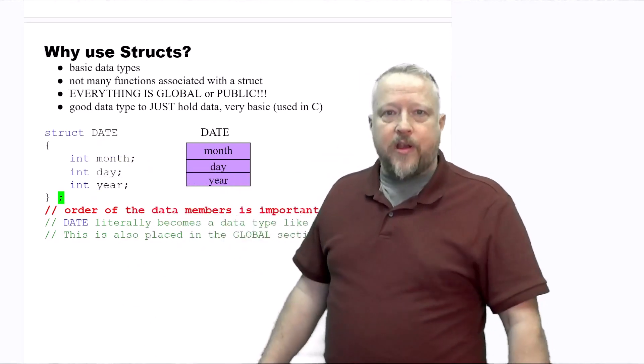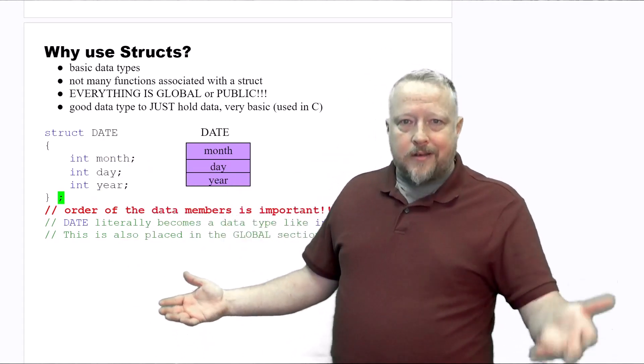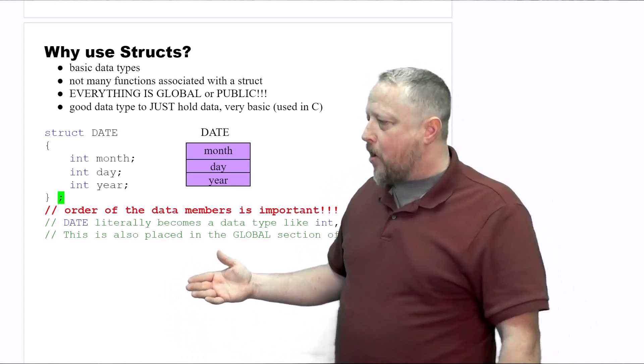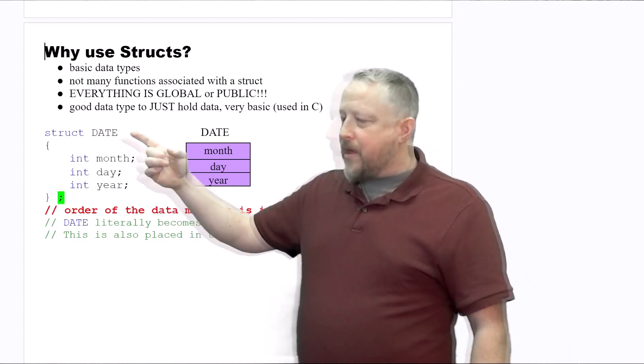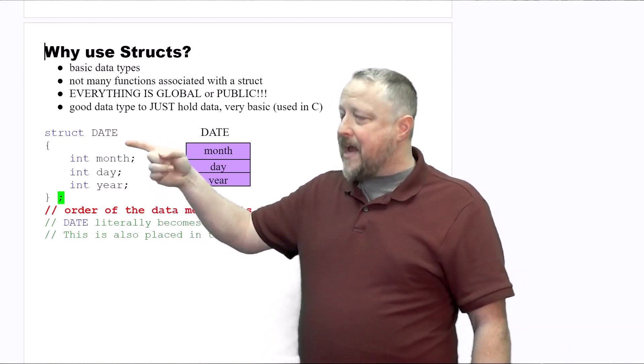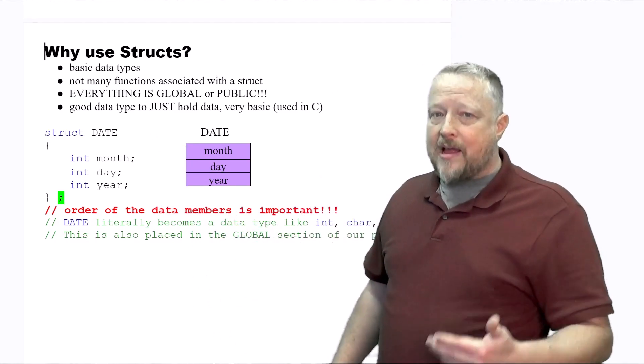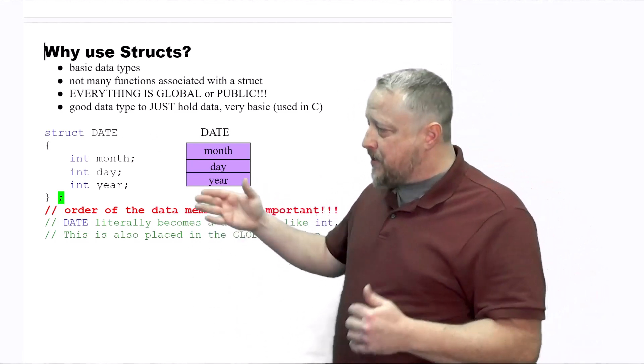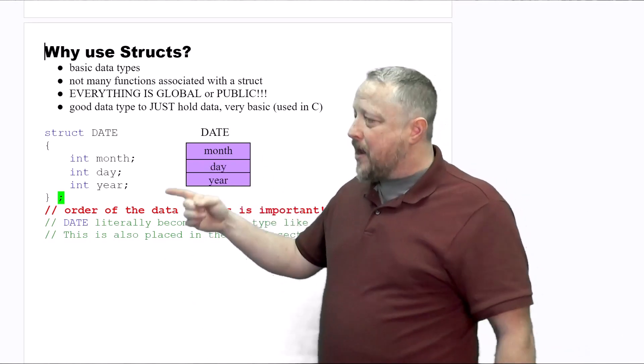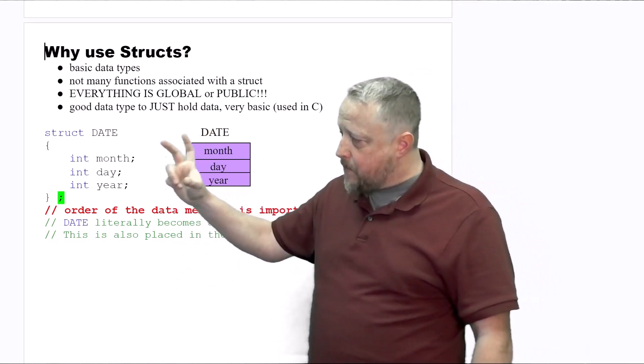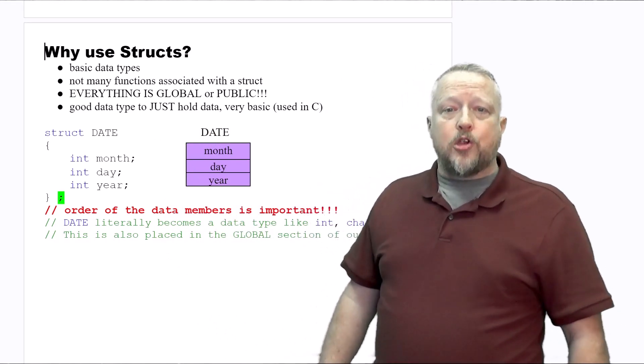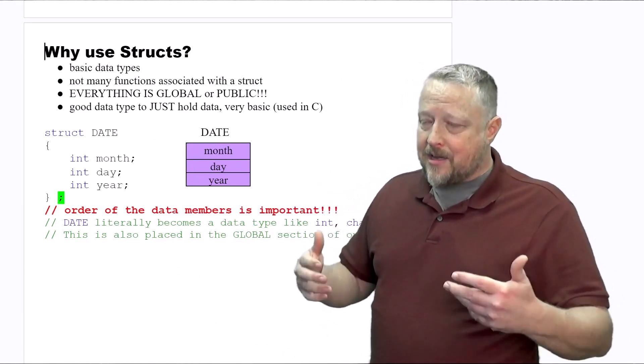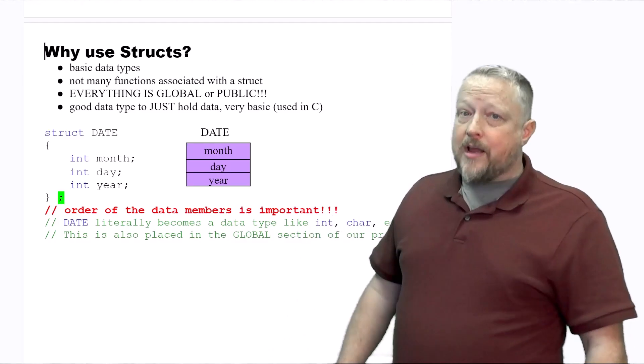defining a complex variable just like you normally did with other variables we've done before. Now that also is going to mean that DATE in capital letters does mean something. If you were to use DATE in capital letters, C++ knows that it's going to be this object that you are going to be using and creating an instance of. So let's take a look at what that looks like.